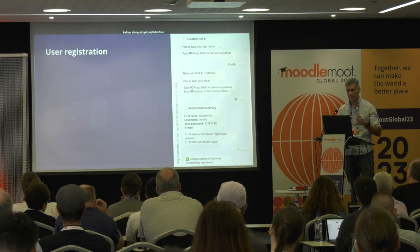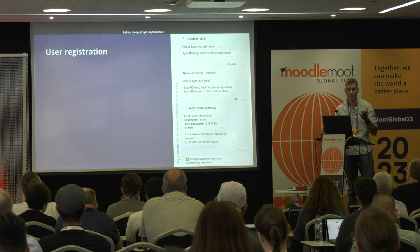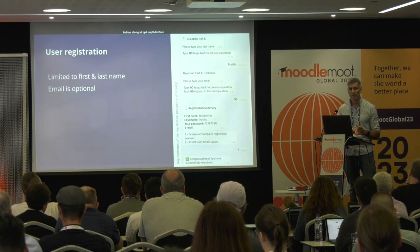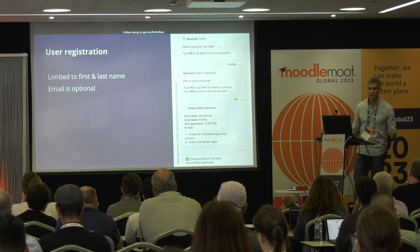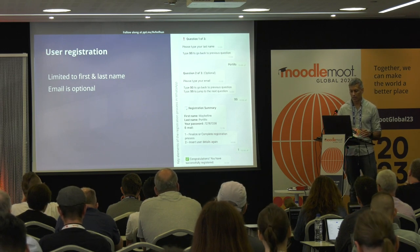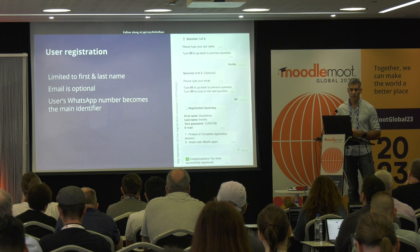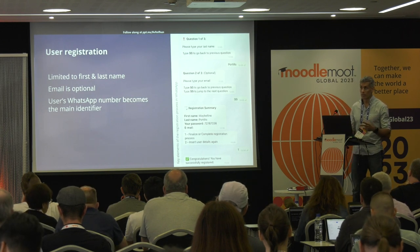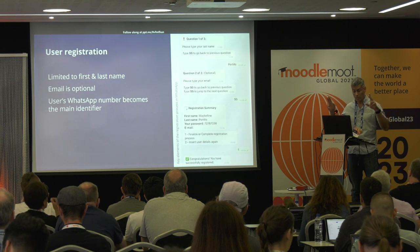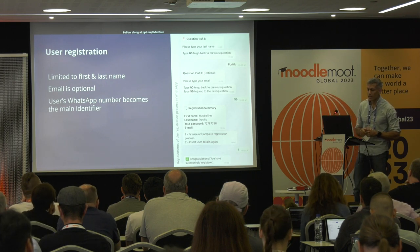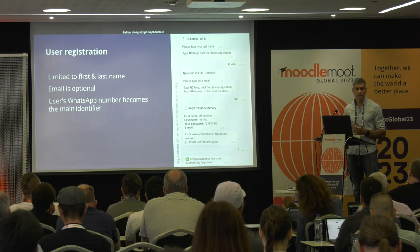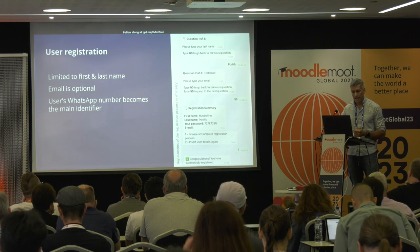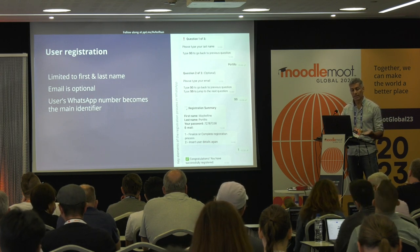We have an animation in a second, but let's look at the five key components. User registration: we keep it very simple — first name and last name. We make email optional. Then we use the WhatsApp number — or eventually when we do Facebook Messenger, the Facebook conversation scope page ID — as the unique identifier of the user.